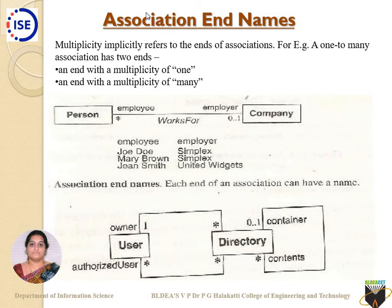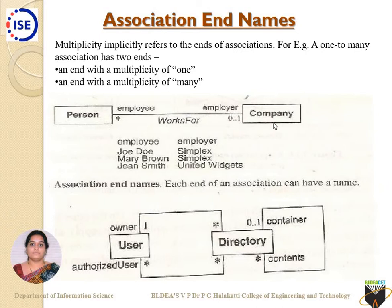My main heading here is 'association end names.' Association end names are nothing but what role is played by one class towards another class. Person as a class — what is the role played towards the Company? In a company, if persons are there, I call them 'employee.' So 'employee' is an association end name which connects this class to the class called 'Company.' On the other side, on the Company side, the class is connected towards it through the association name called 'employer'.